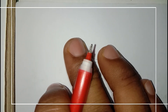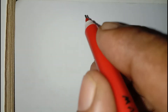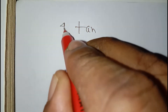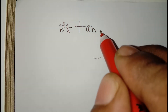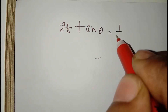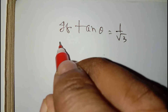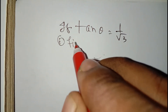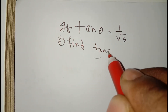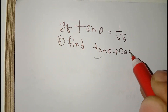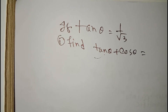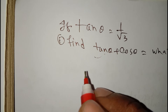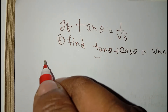Today we will do trigonometry. Let's solve: if tan theta is equal to 1 by root 3, then find tan theta plus cot theta.